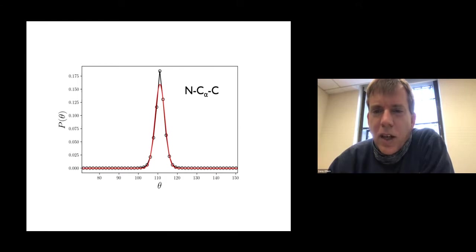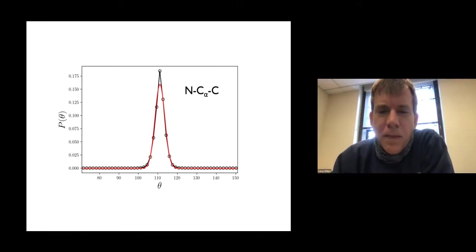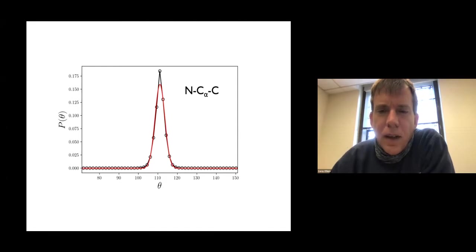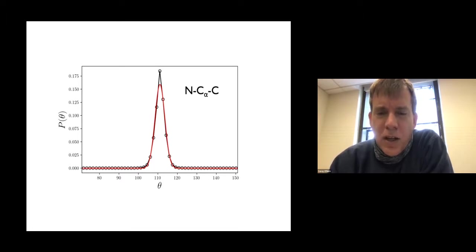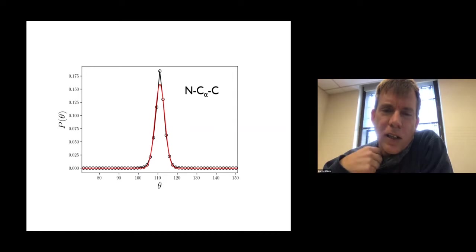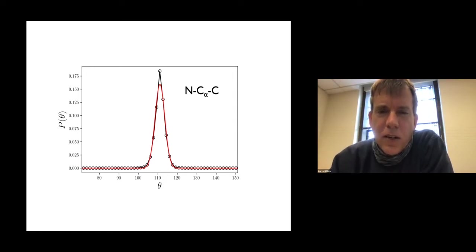Specifically, a nitrogen, a C-alpha, and then a carboxyl carbon. Here are examples of that for thousands of structures taken from experimentally determined x-ray crystal structures. You see it's not exactly Gaussian, but the deviations aren't that strong.